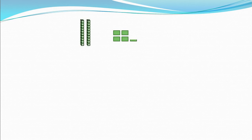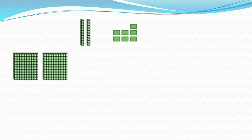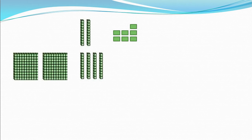Now look at this sum. There are 2 stacks of tens and 1, 2, 3, 4, 5, 6, 7 ones. Then there are 2 hundred blocks, 4 stacks of tens, and 1, 2, 3, 4, 5, 6, 7, 8, 9 ones blocks.